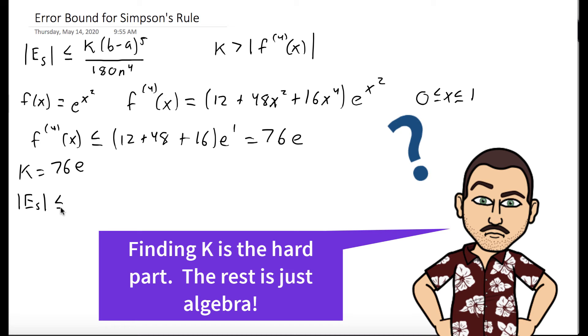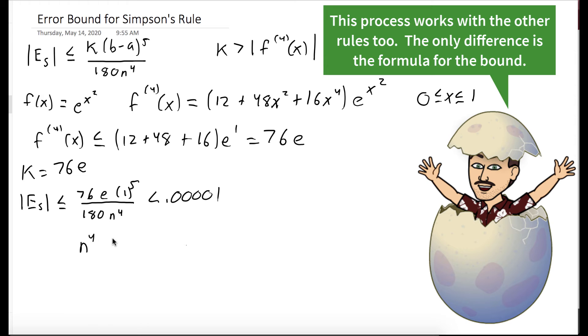So our Simpson's error is bounded by 76e times one to the fifth over 180 n to the fourth. And we want this to be less than 0.00001. We could manipulate this inequality to say that n to the fourth is greater than 76e over 180 times 0.00001, which is approximately 114,771.9.